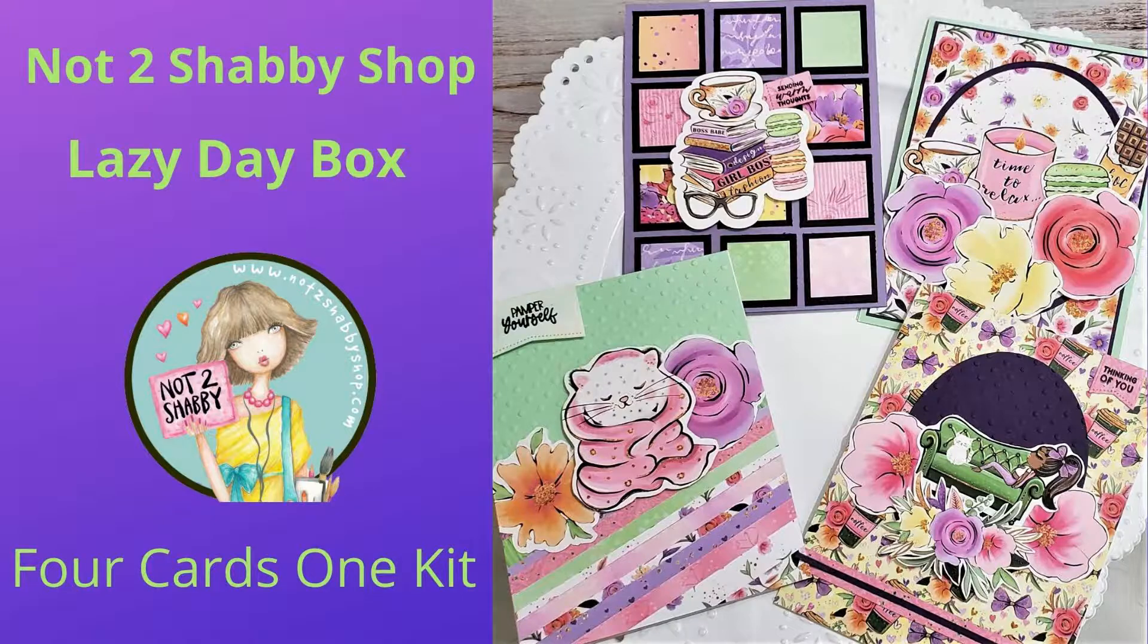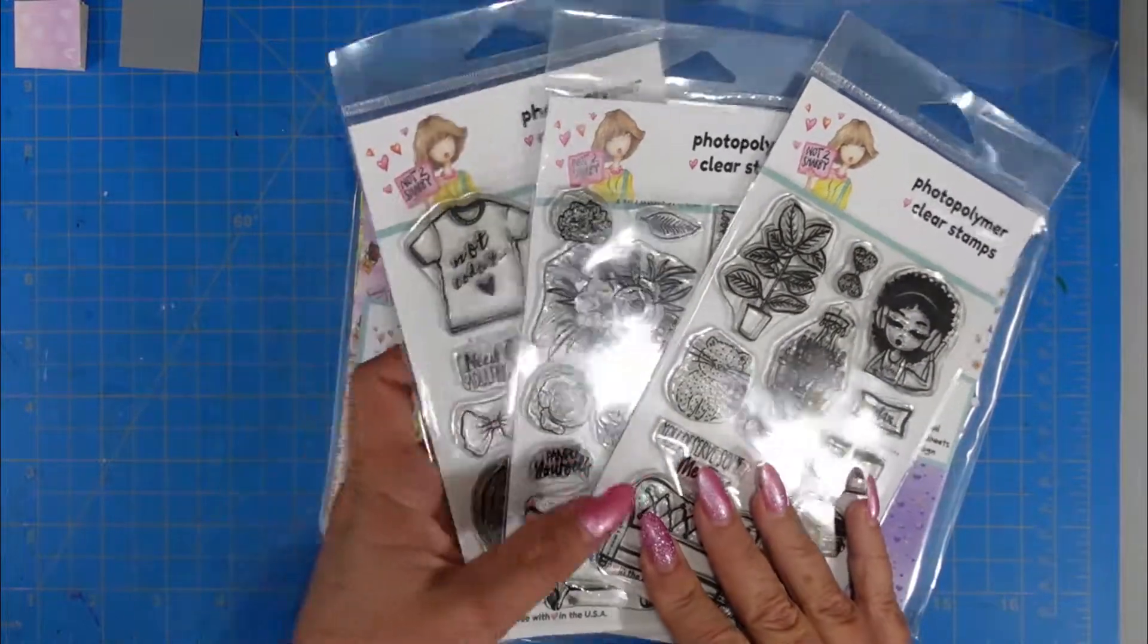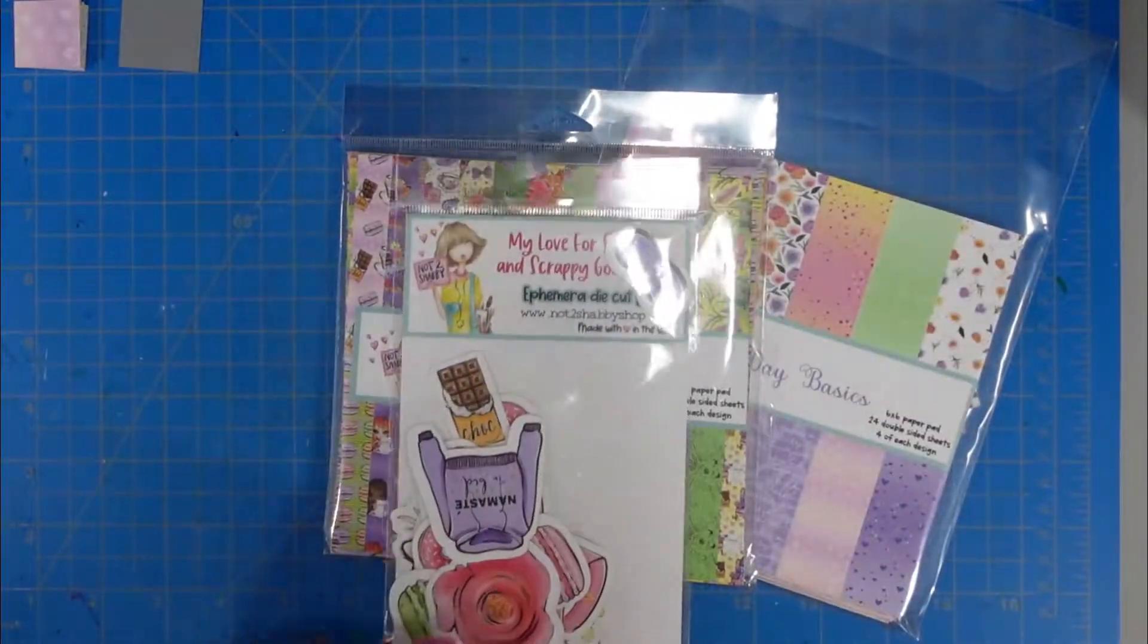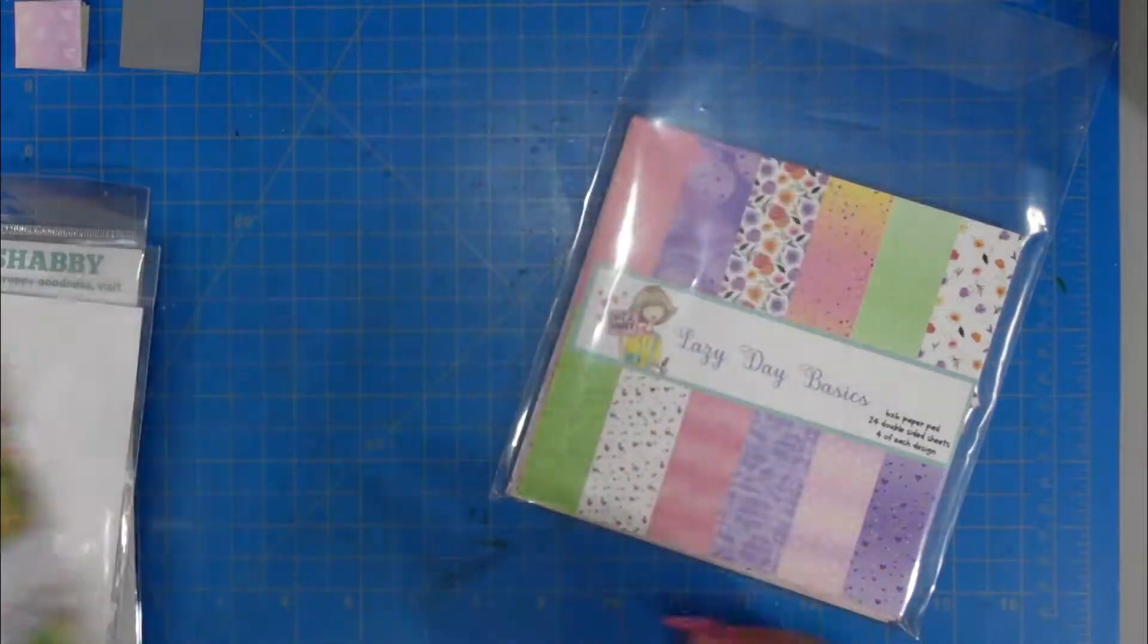I'm going to show you quickly the products that were included in the box. There were three stamp sets, an ephemera pack, two paper pads, and a sequin mix. I will not be using the sequin mix today.